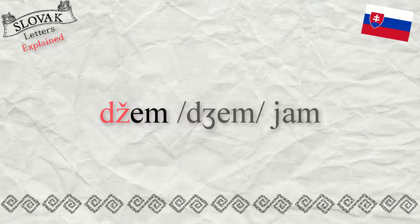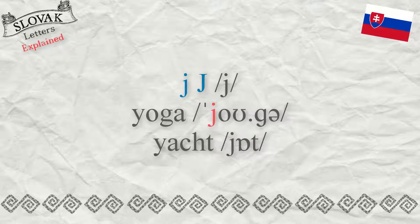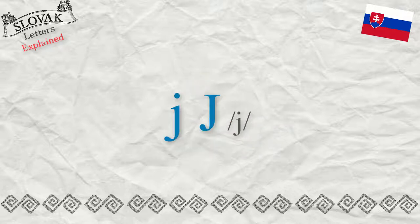The sound DŽ is never represented by the letter J in Slovak. The letter J in Slovak always sounds as in English 'yoga' or 'yot' — it is always a Y sound. It is never the English J sound.